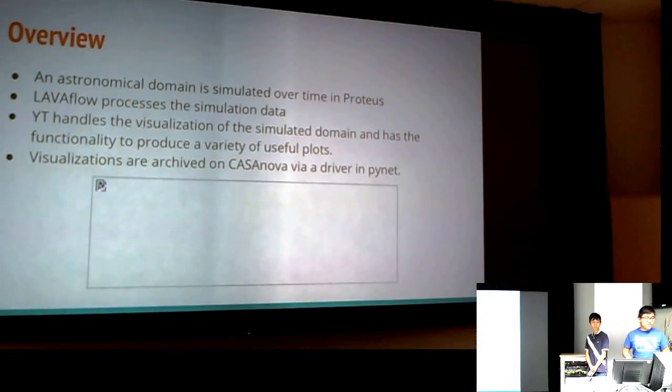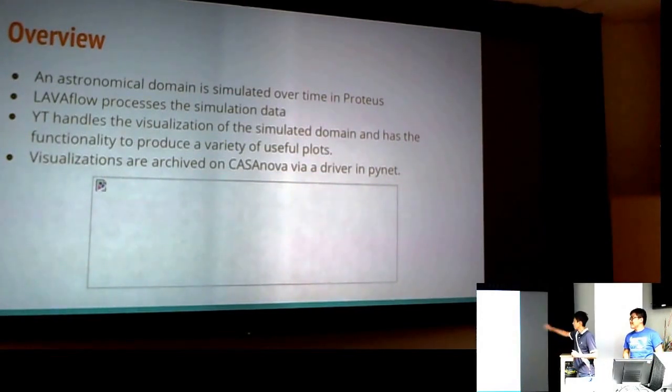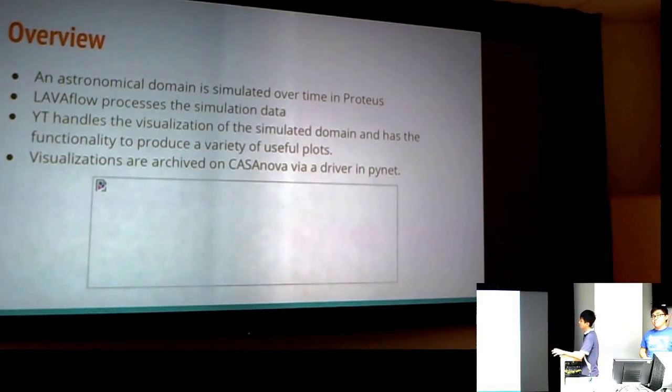And there was a picture here that showed a handy diagram. Okay, so basically the diagram shows this hierarchy, if you could see the image on the left, you'll have Proteus branching off into YT and LavaFlow, which goes to PyNet, and eventually to the online database, which is Casanova, that the users can access.